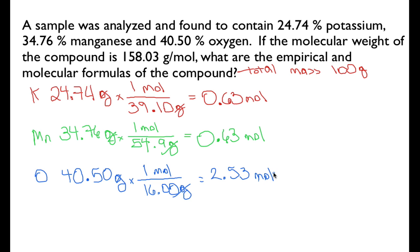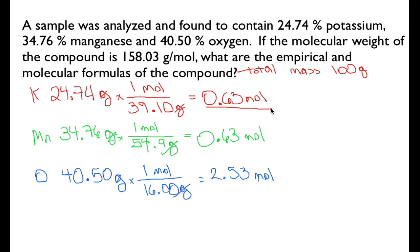The first step is to convert from percent to grams — which you can do by assuming you have a 100-gram sample — and then convert from grams to moles. Now we want to compare the ratio of moles of potassium to manganese to oxygen. We do that by dividing each molar value by the smallest molar value, which is 0.63.